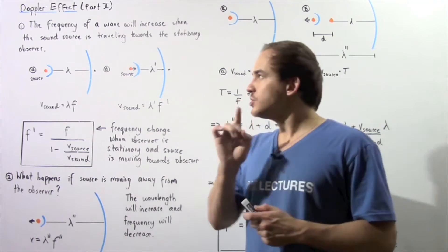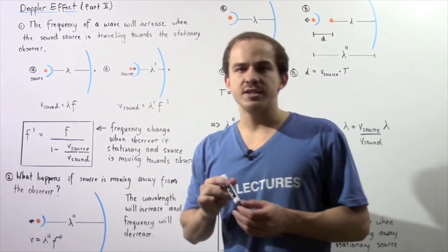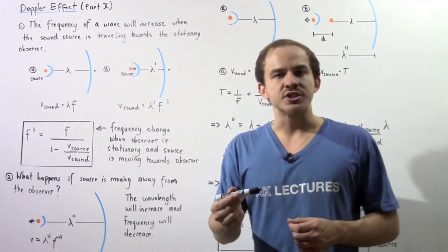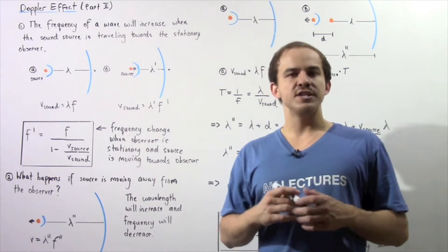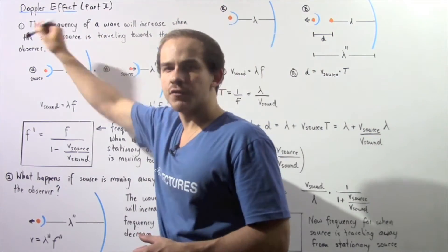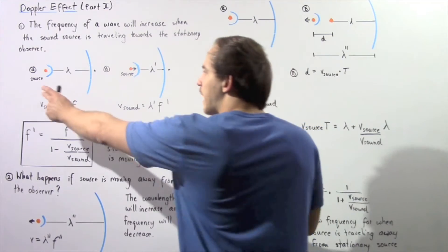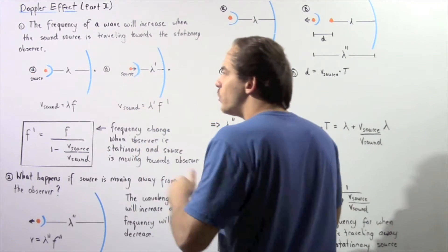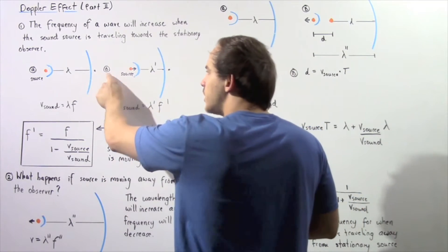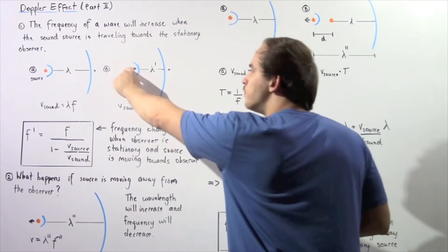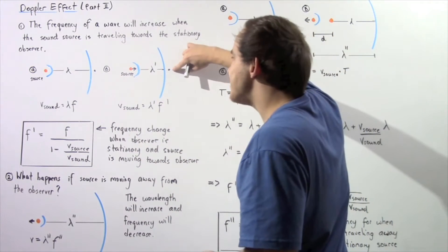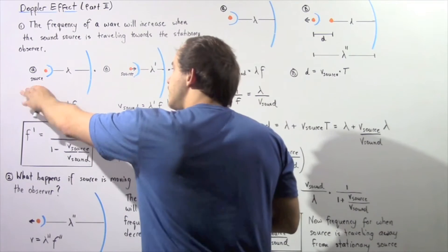In particular, we saw that the frequency of a sound wave will increase when the sound source is moving towards the stationary observer. Let's recall the following two cases: in case A, we have a stationary source and stationary observer, and in case B, we have a moving source creating the sound wave and a stationary observer.